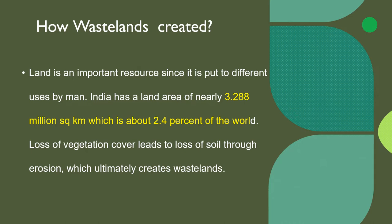Land is an important resource since it is put to different uses by humans. India has a land area of nearly 3.288 million square kilometers, which is about 2.4 percent of the world. Loss of vegetation cover leads to loss of soil through erosion, which ultimately creates wasteland.